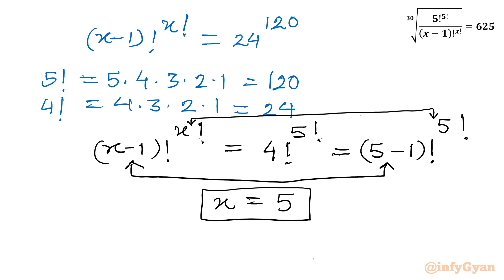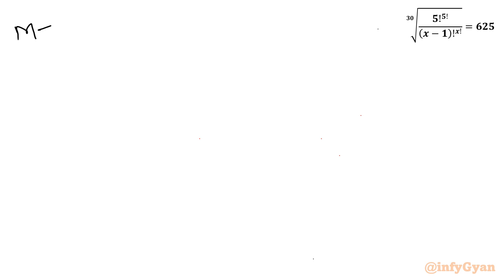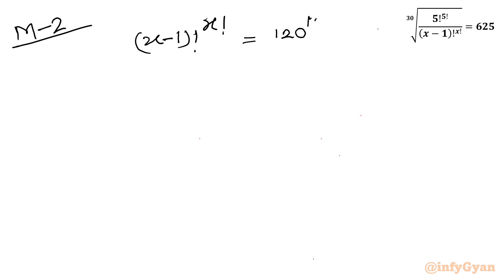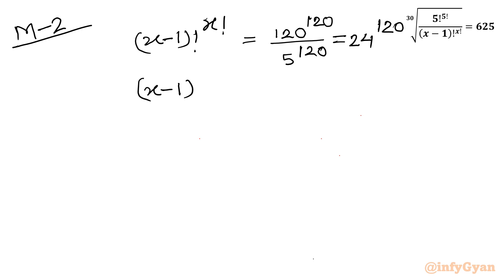Method number 2, using logarithms. Starting from x minus 1 factorial raised to the power x factorial equals 120 power 120 divided by 5 power 120, which simplifies to 24 power 120. So the equation is: x minus 1 factorial raised to the power x factorial equals 24 raised to the power 120. Now let us apply log base 10 to both sides.